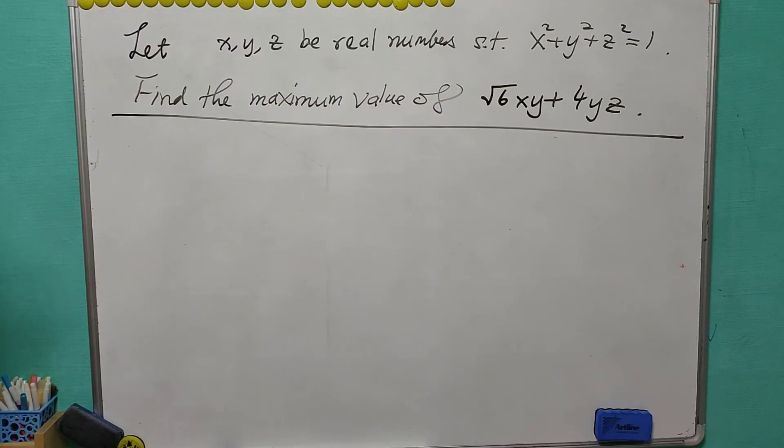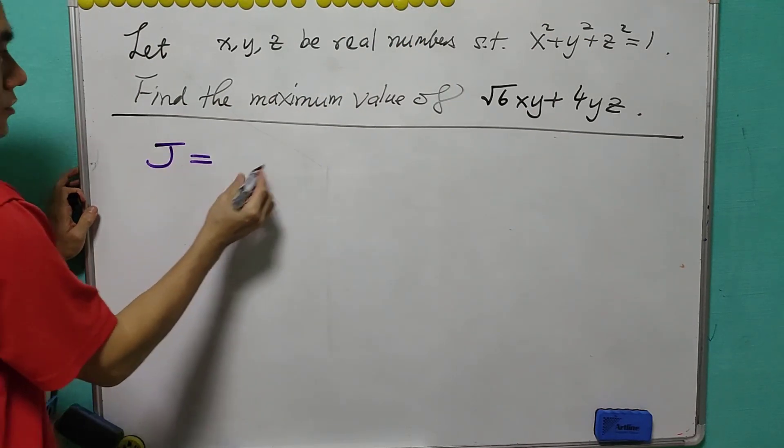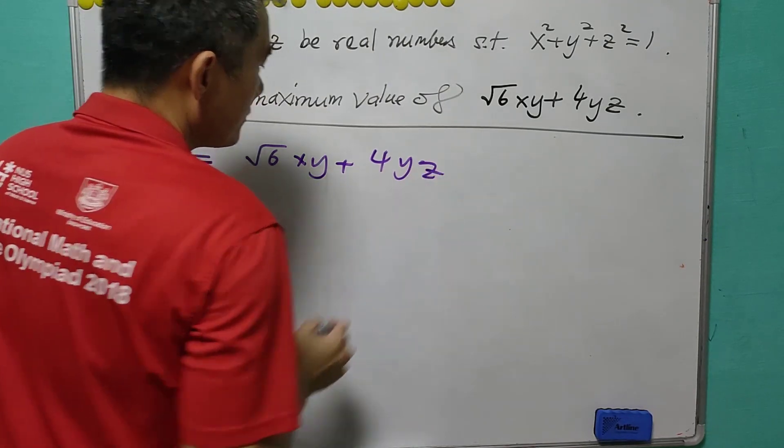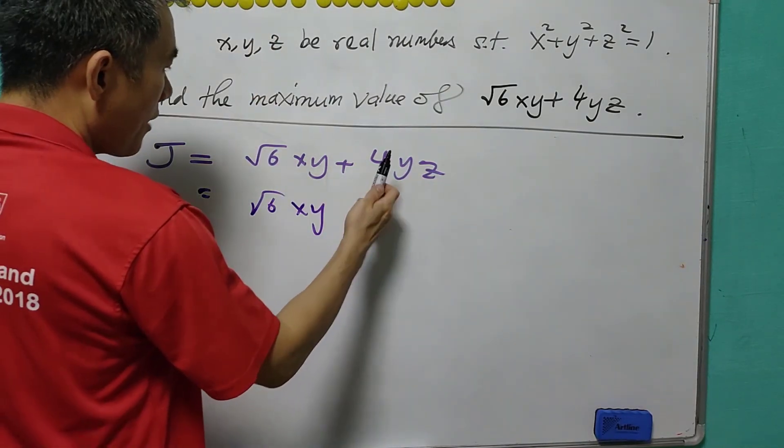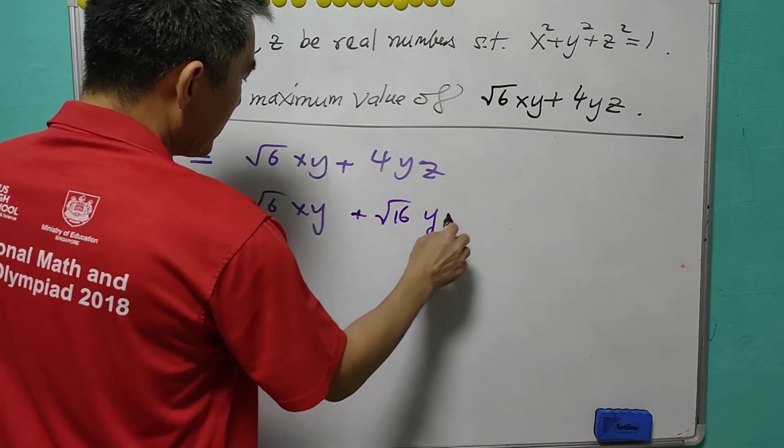Here's a very interesting trick for this question. You see J = √6xy + 4yz. This is √6 and for 4 it can be written as √16yz.